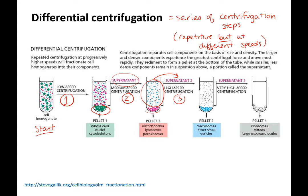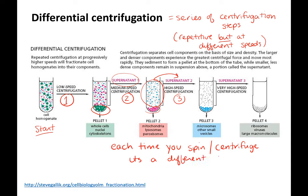You do it at a little higher speed each time so you can get smaller and smaller particles coming down. Each time you centrifuge, it's at a different speed, and molecules are separated into pellets. So you're doing a series of spins, repeating this but changing the speed higher and higher so you can get the smaller and smaller stuff.